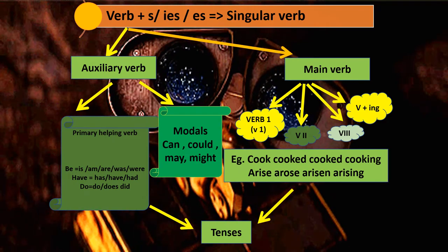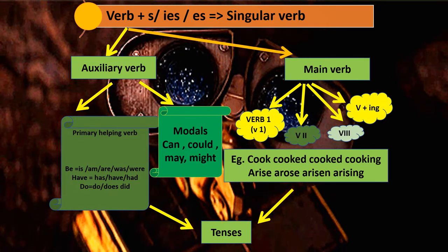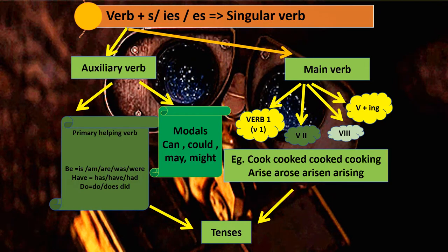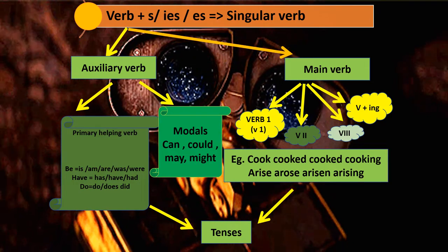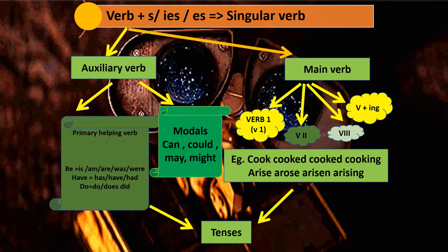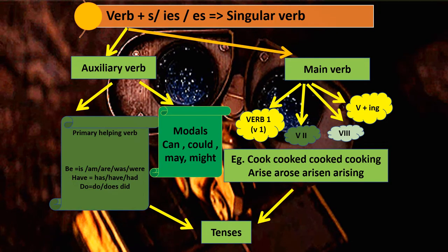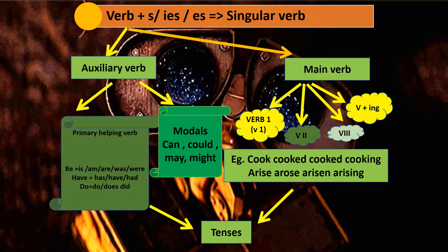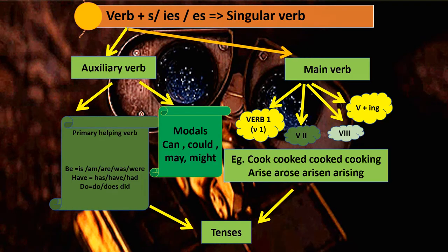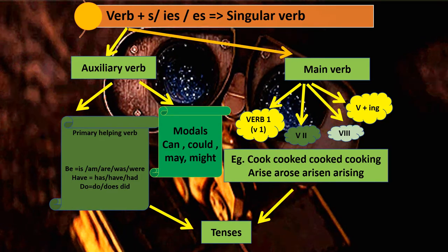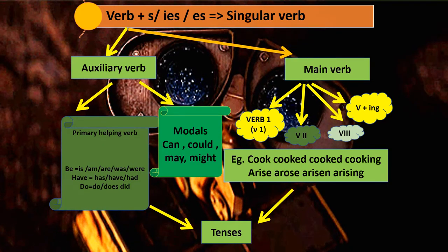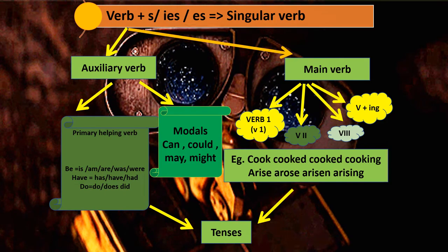Auxiliary and main verb together, when they come in a sentence, they form the tense. Because is/am/are/was/were tell you what kind of tense it is, and Verb 1, V2, V3, and V-I-N-G help you form different types of tenses like simple present tense, past tense, and continuous tense. Both verbs together tell you the tense of the sentence.